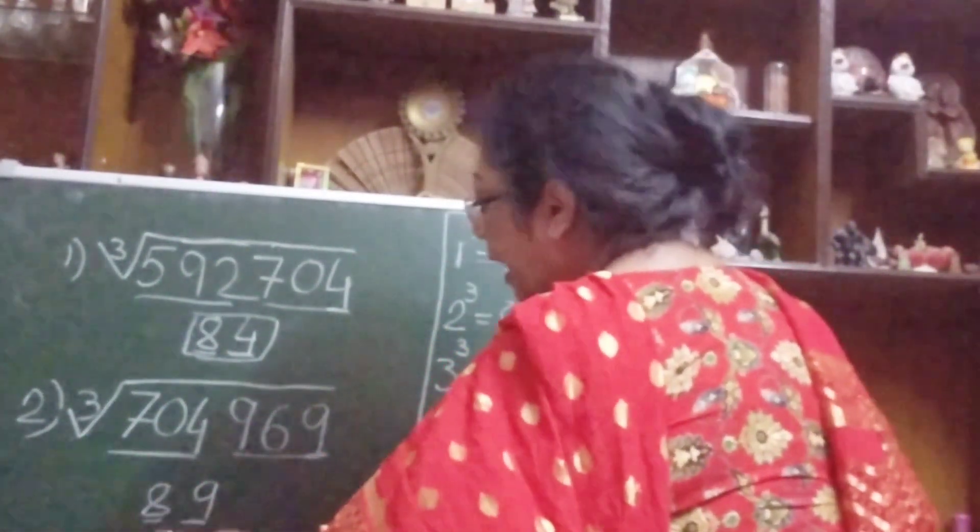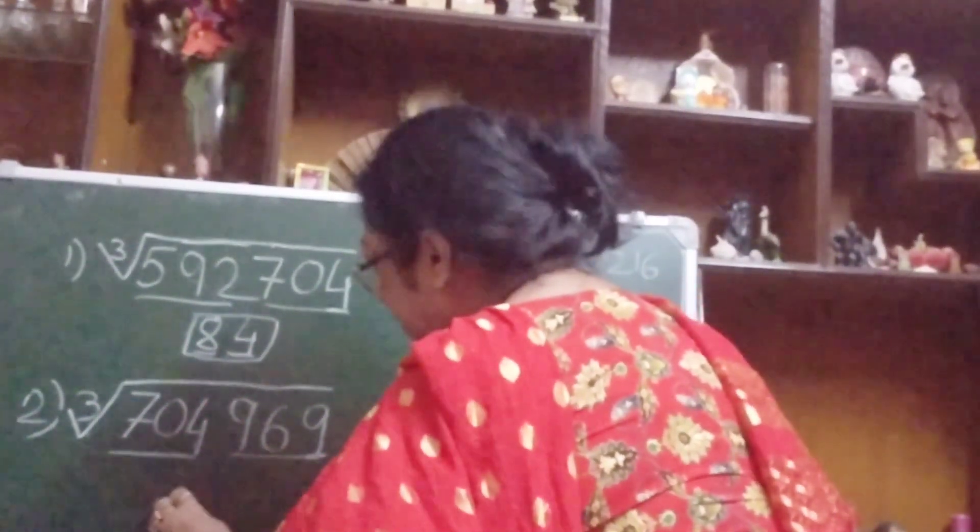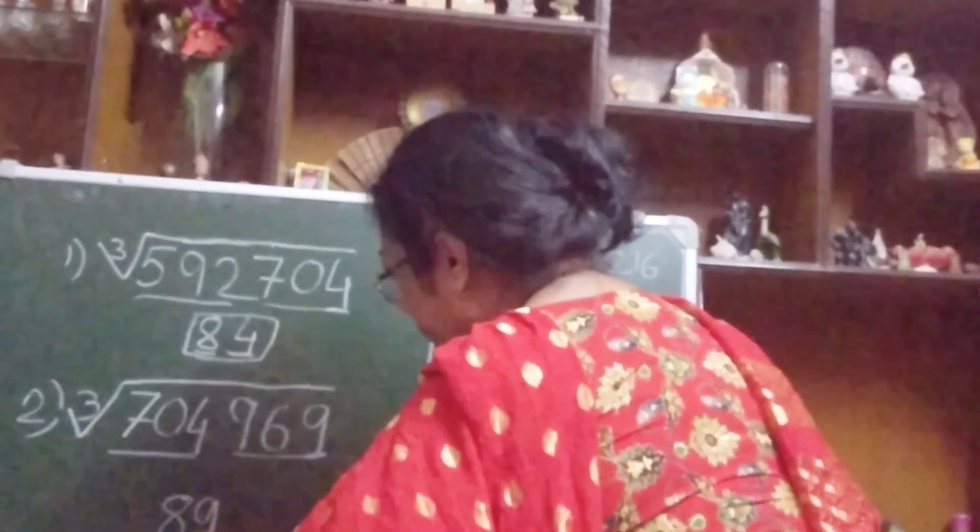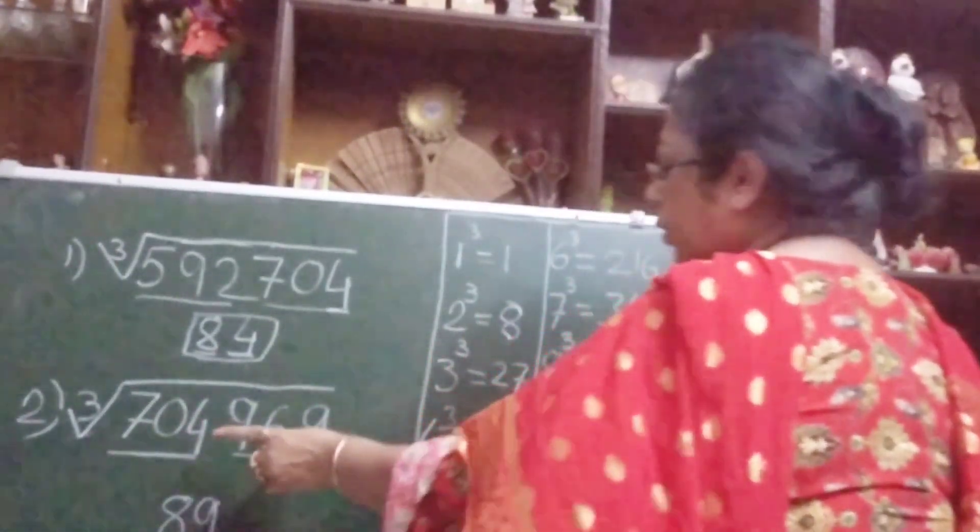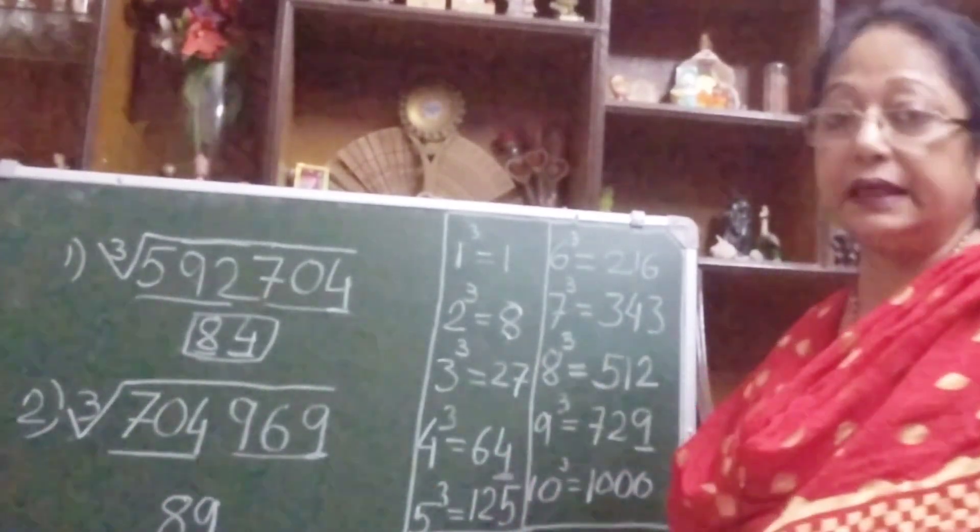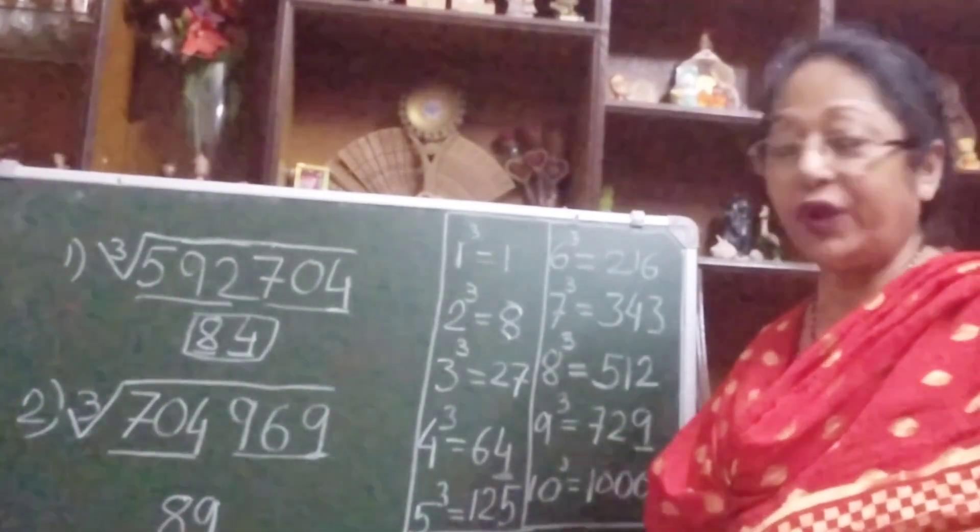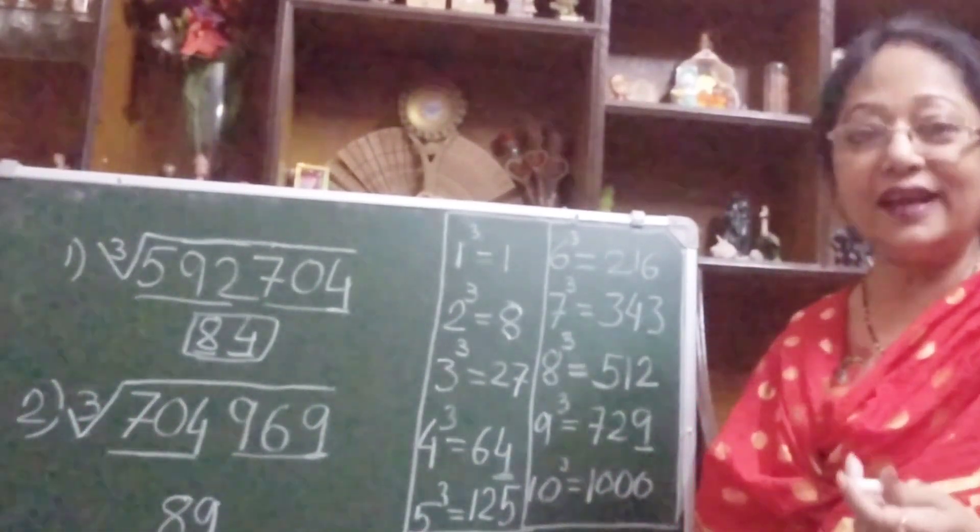So our answer is, let me write it nicely, our answer is 89. So what is the cube root of 704169? We will say very, very quickly, the answer is 89.